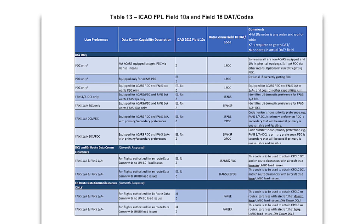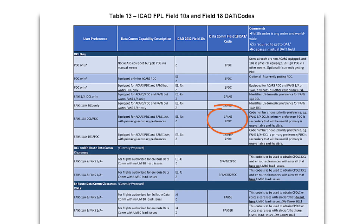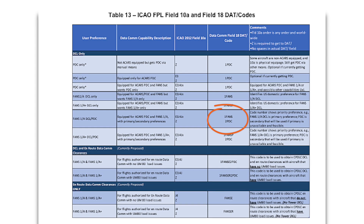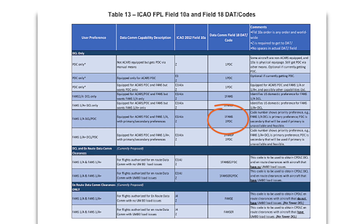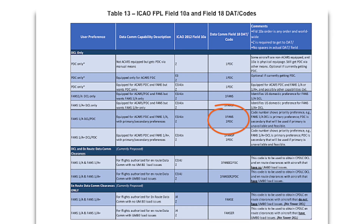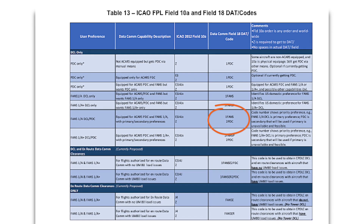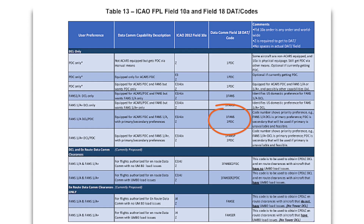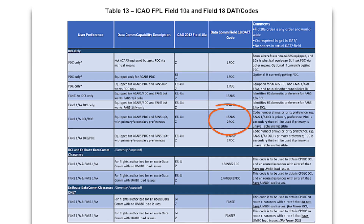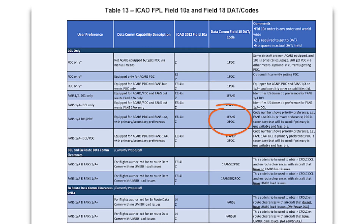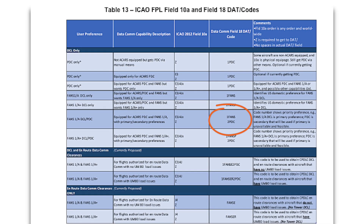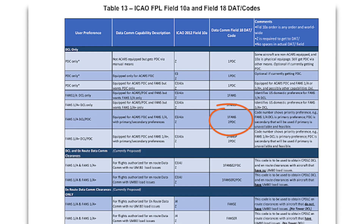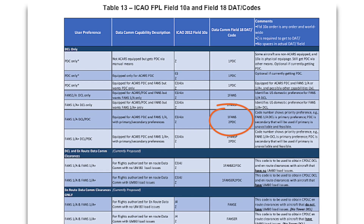These codes can be found on the dcis.harris.com website in a document titled CPDLC end-to-end description. For example, one code is used when an operator prefers DCL as the primary clearance delivery method and PDC as the secondary method. In this case, the controller will automatically send a DCL to the aircraft, and a PDC will be sent only in the event the tower is unable to send it via DCL.